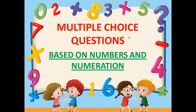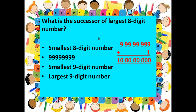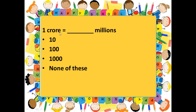Let us learn a few multiple-choice questions from the topic Numbers and Numeration. The first question is: what is the successor of the largest eight-digit number? The largest eight-digit number is 9,99,99,999. If we want to find its successor, we add one to it, giving us 10 crores. This has nine digits, and it is the smallest nine-digit number.